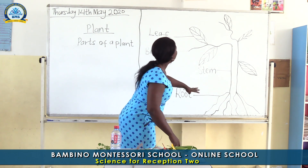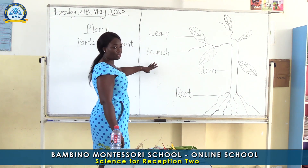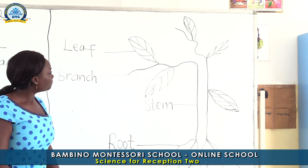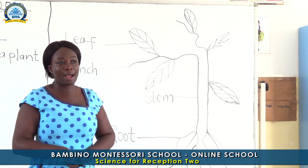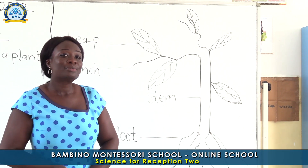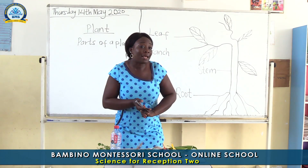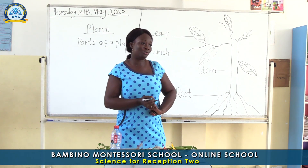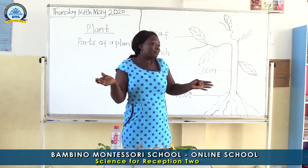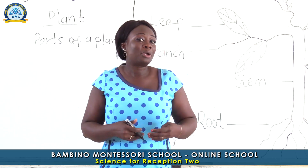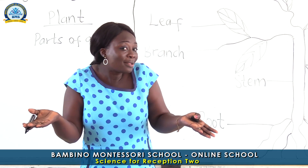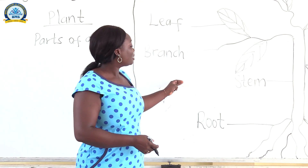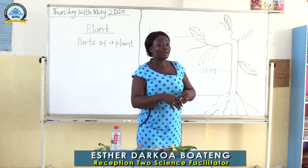So now we have our plants and we have named the parts of our plants. Isn't it beautiful? We are going to try as much as possible and work on plants. What we are going to do is — I would love you to draw a plant on your own, name the parts, and you can put lots of stars on the plant. I want you to do that. So we will stop here and continue another time.